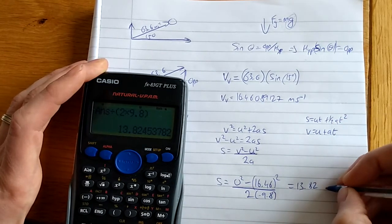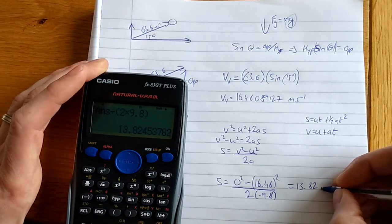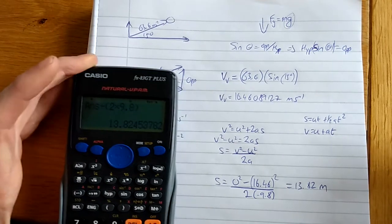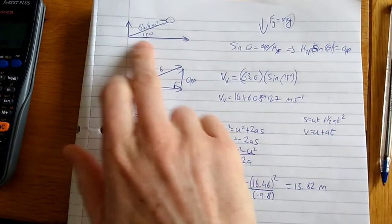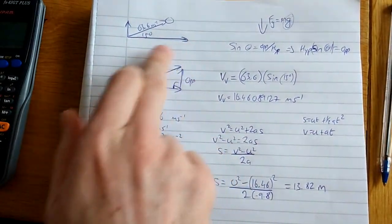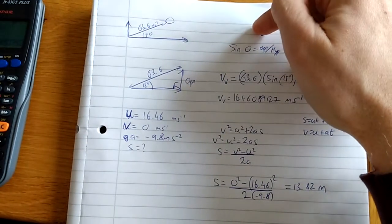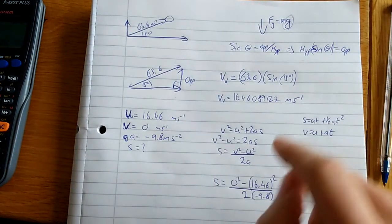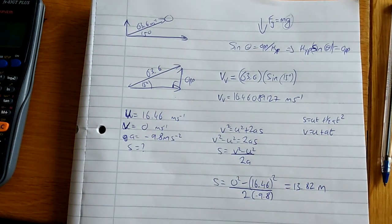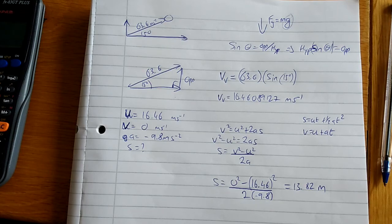So 13.82 meters - that's how high it goes. We can ignore the horizontal distance. All I want to know is how far did it go up. What's stopping it? Gravity. So it's the same as throwing a ball straight up at 16.46 meters per second, or hitting it at 15 degrees at 63.6 meters per second. In terms of vertical displacement, they're the exact same thing.